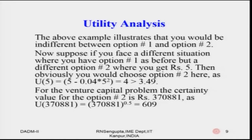The example illustrates that you would be indifferent between option 1 and option 2. Now suppose you face a different option 2 where you get rupees 5 — its utility is 5 − 0.04×5² = 4, and since 4 > 3.49, you will obviously take that sure event because the expected value is higher.